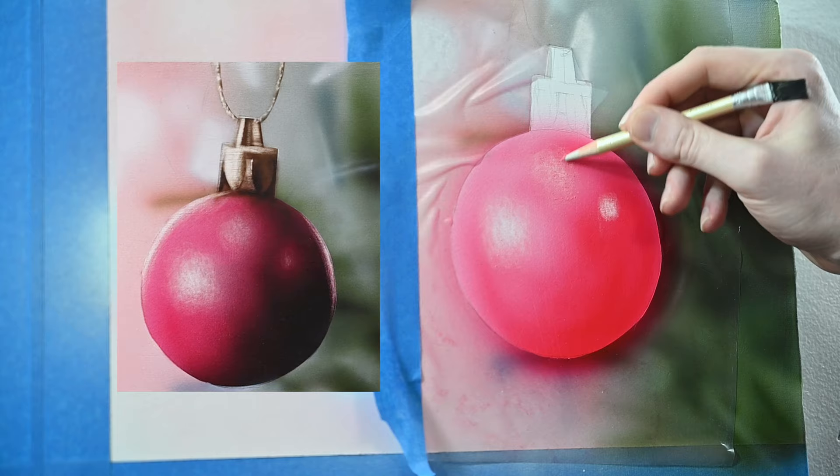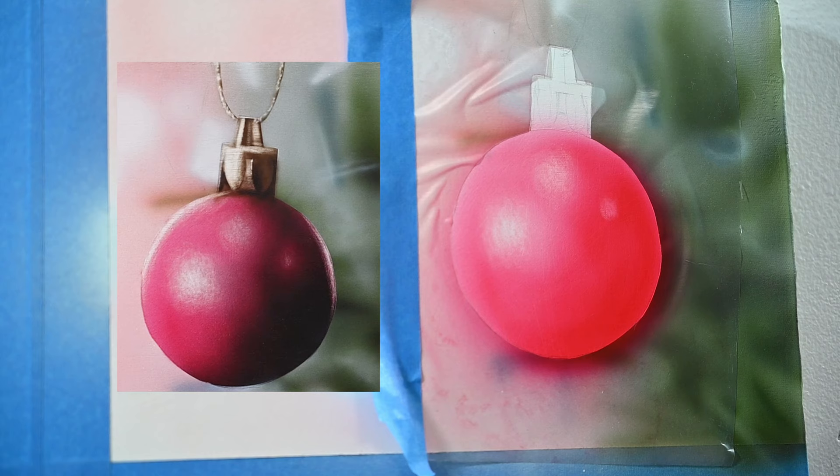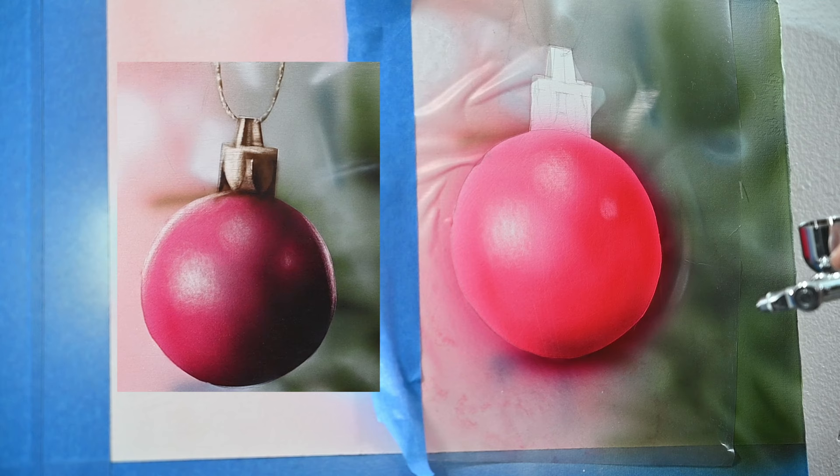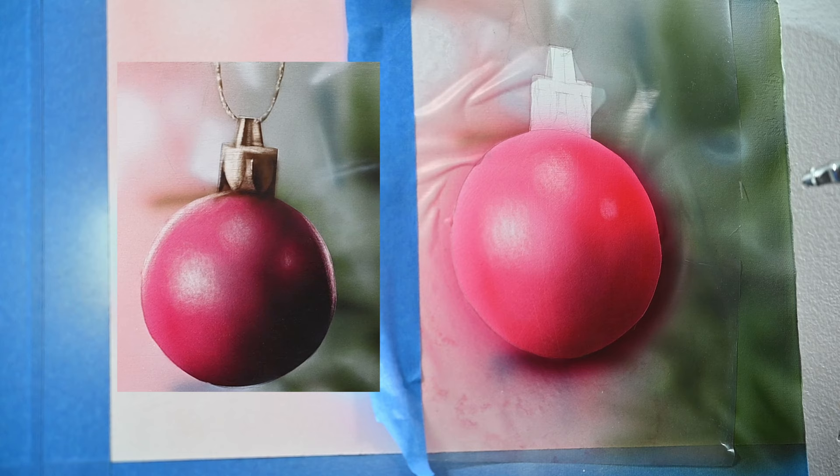I'm spraying some more red over the ornament. But I think I've reached the limit on the right side. This is basically as dark as that scarlet red is going to get. So I'm using the color black now, and I'm lightly glazing that over the right side of this ornament.